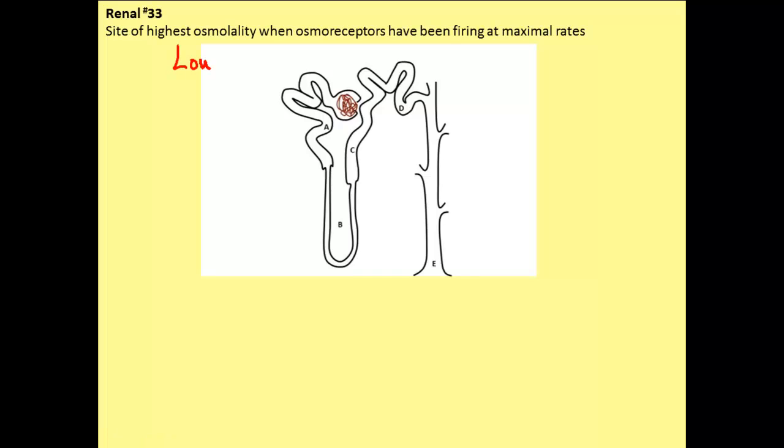So, we are going to represent the osmolalities when ADH is low in red and when ADH is high, we will represent those osmolalities in green. Let's just walk through each of our points and talk about what we would expect the osmolalities to be.